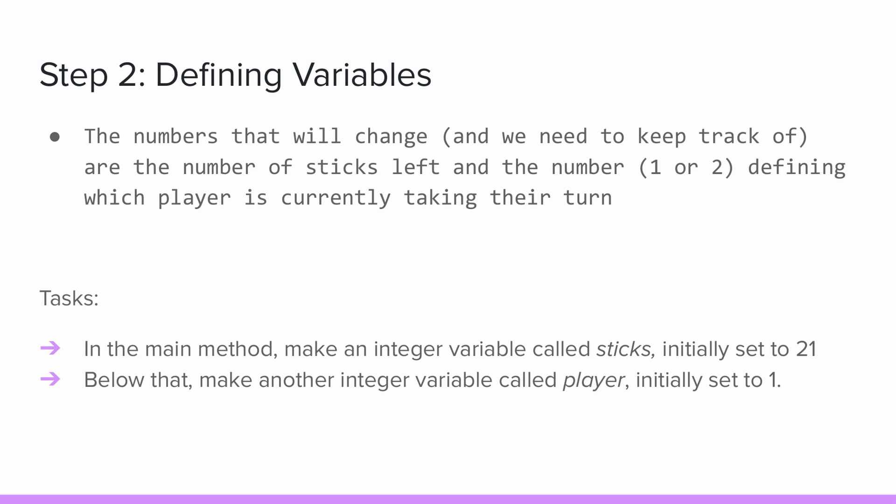Variables are always the numbers that change and that we need to keep track of. For this project, we need to create variables for the number of sticks left and for the current player. Both should be integers. The number of sticks should initially be set to 21, and the current player should be initially set to 1. Pause the video here and make your variables.